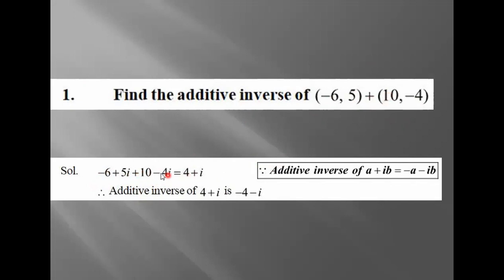Which one? Ten is written here. The imaginary part — each bracket's second value is the imaginary part: minus four i. Okay, so we calculate the real parts: minus six plus ten equals four. Five i minus four i equals i.